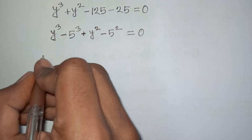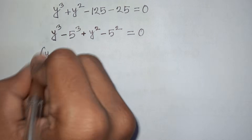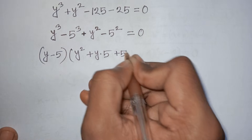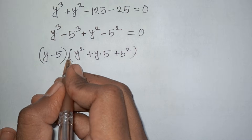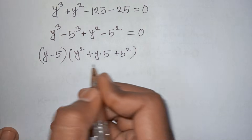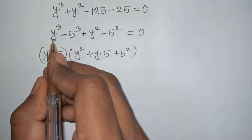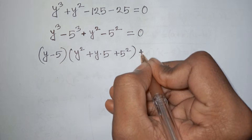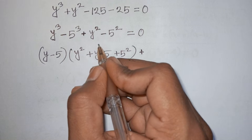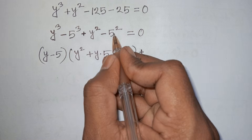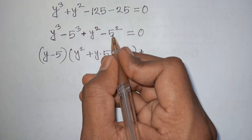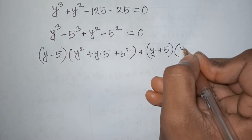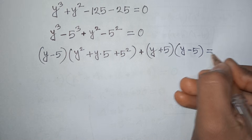Here a = y and b = 5. According to the formula a³ - b³ = (a - b)(a² + ab + b²), we write (y - 5)(y² + 5y + 25). Then for y² - 25, we apply the difference of squares formula a² - b² = (a + b)(a - b), giving (y + 5)(y - 5), so the full expression equals 0.